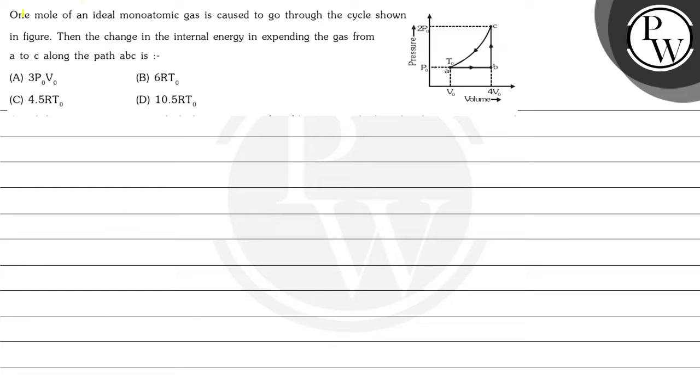Hello Bacho, let's read this question. One mole of an ideal monoatomic gas is caused to go through the cycle shown in figure. Then the change in internal energy in expanding the gas from A to C along the path ABC is.